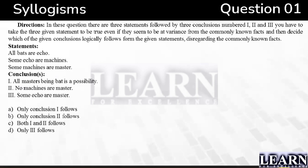The three statements given are: all bats are echoes, some echoes are machines, some machines are masters. The conclusions given are: (1) all masters being bat is a possibility, (2) no machines are masters, (3) some echoes are masters. What will be the answer for this question?